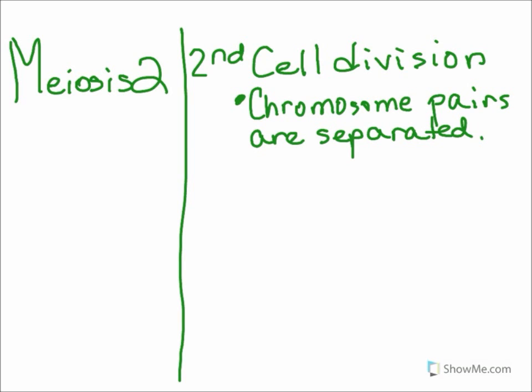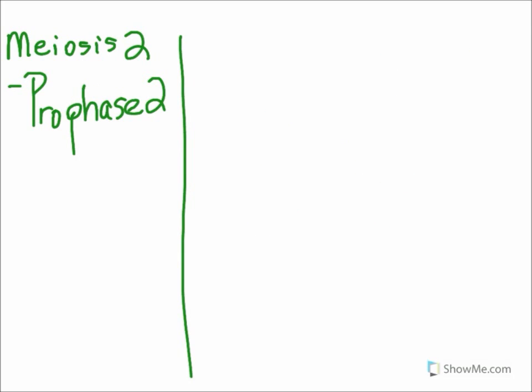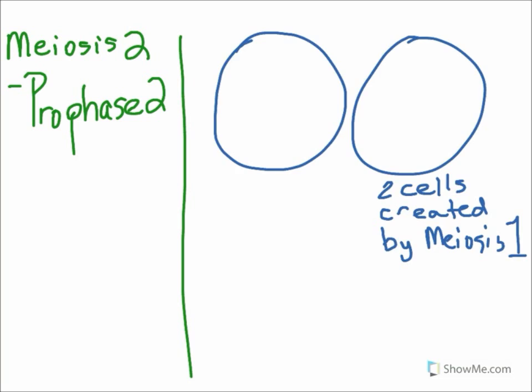The second cell division is called meiosis II. During meiosis II, chromosome pairs are separated and gametes are created. So let's take a look at how this happens inside the cell. In meiosis II, there are four phases: Prophase II, metaphase II, anaphase II, and telophase II. So in prophase II, the chromosomes condense from the chromatin that was created during meiosis I. It looks like this. First, we have the two cells created by meiosis I. They each contain chromatin, and during prophase II, the chromatin is going to condense back into chromosomes. But in this case, unlike prophase I, the chromosomes are not going to copy themselves.